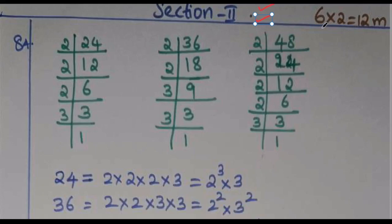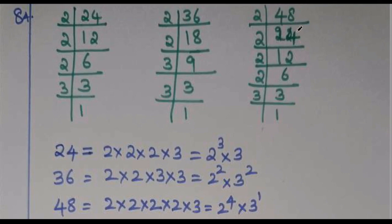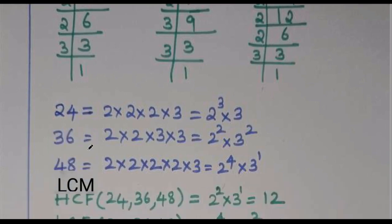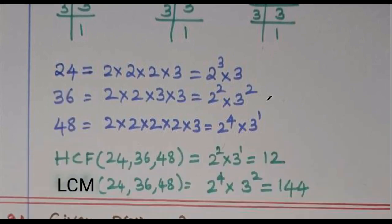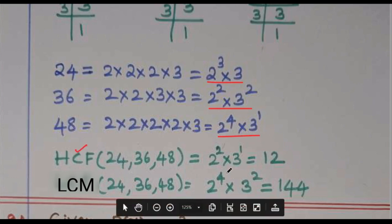Now discussing Section 2 — 6 questions, 2 marks each, total 12 marks. Question 8: Find the HCF and LCM of 24, 36, and 48 using prime factorization. 24 equals 2 cubed times 3, 36 equals 2 squared times 3 squared, 48 equals 2 to the power 4 times 3. The HCF is 2 squared times 3, which is 12. The LCM involves 2 to the power 4 times 3 squared, which is 144.